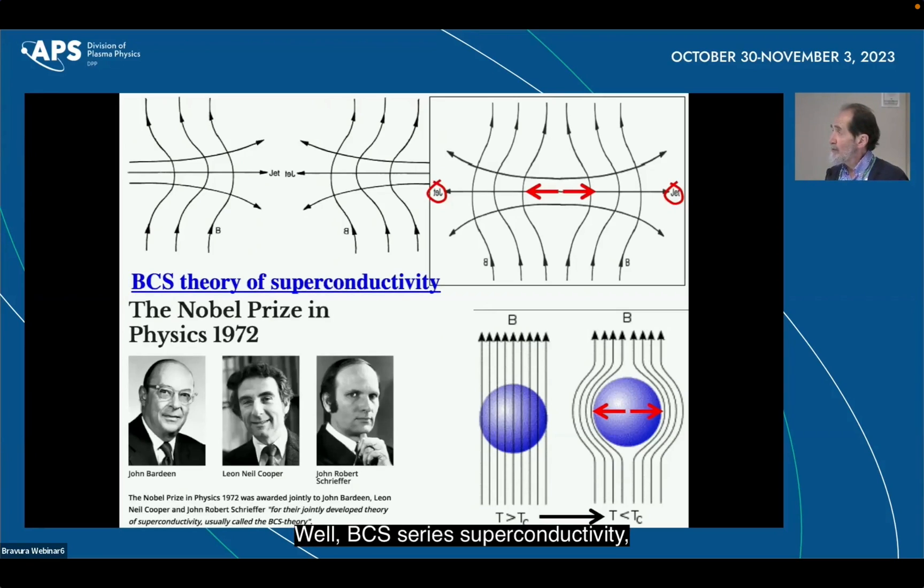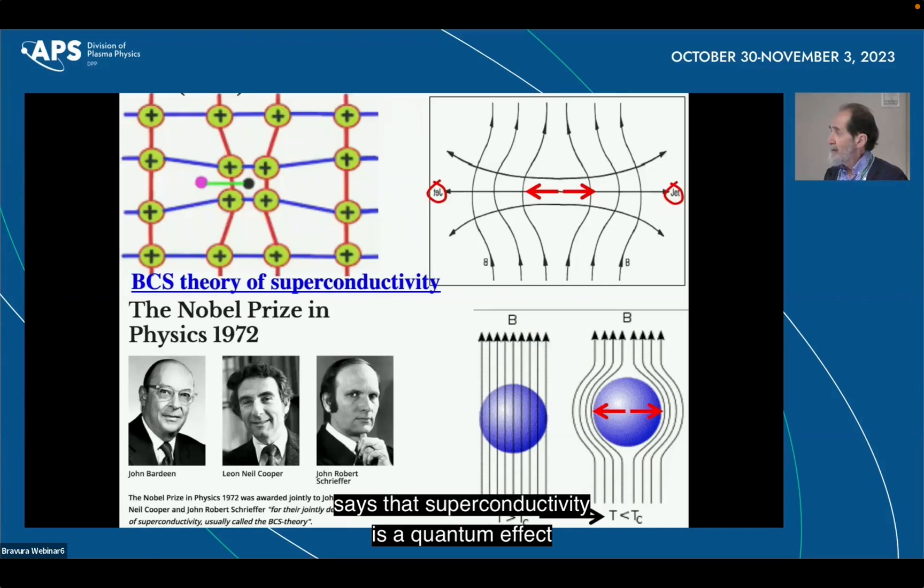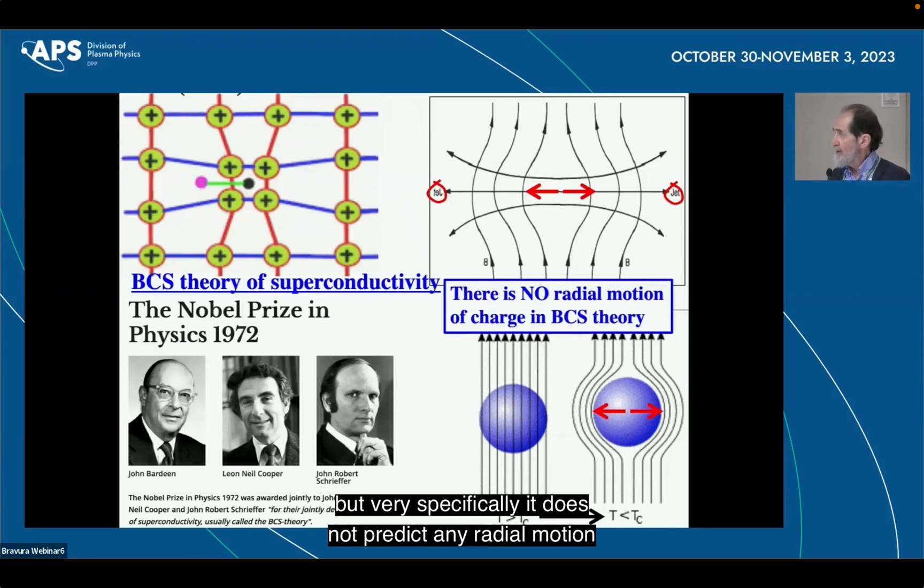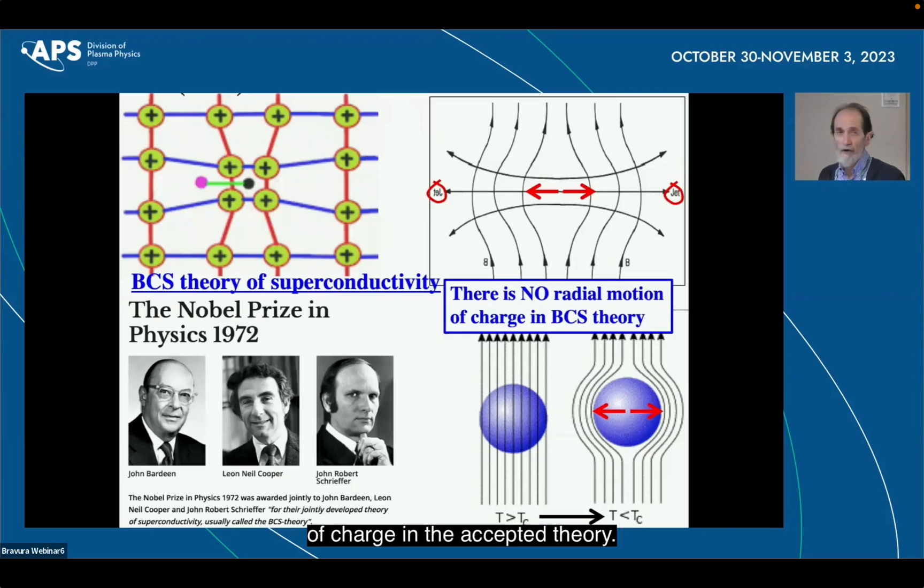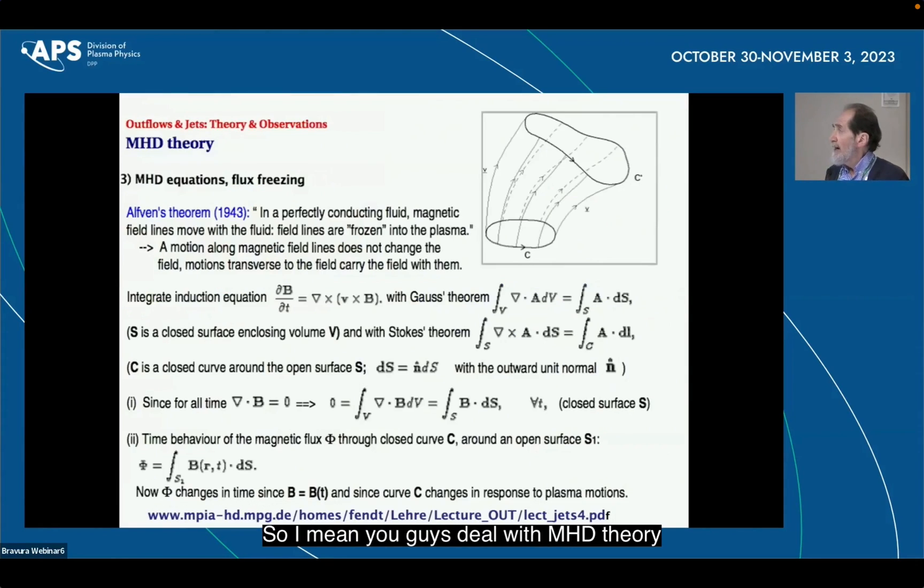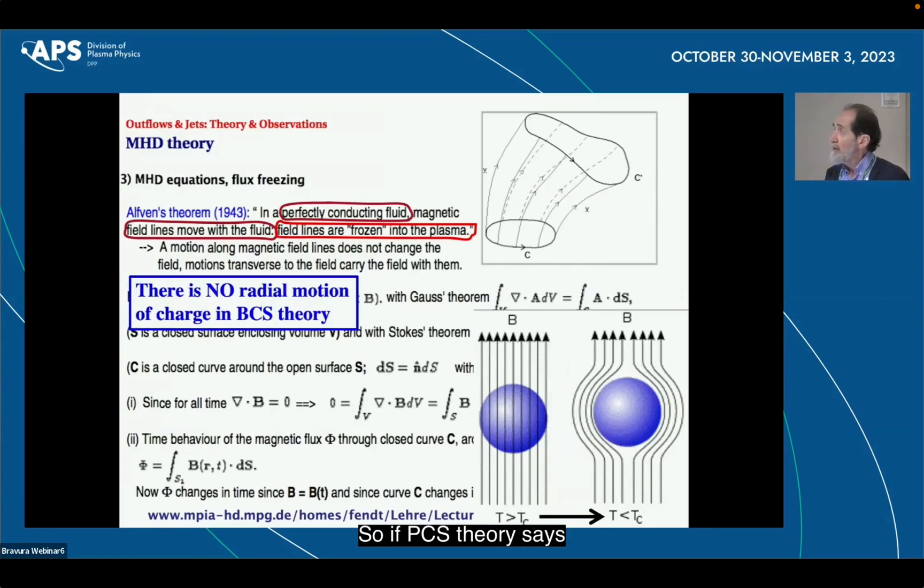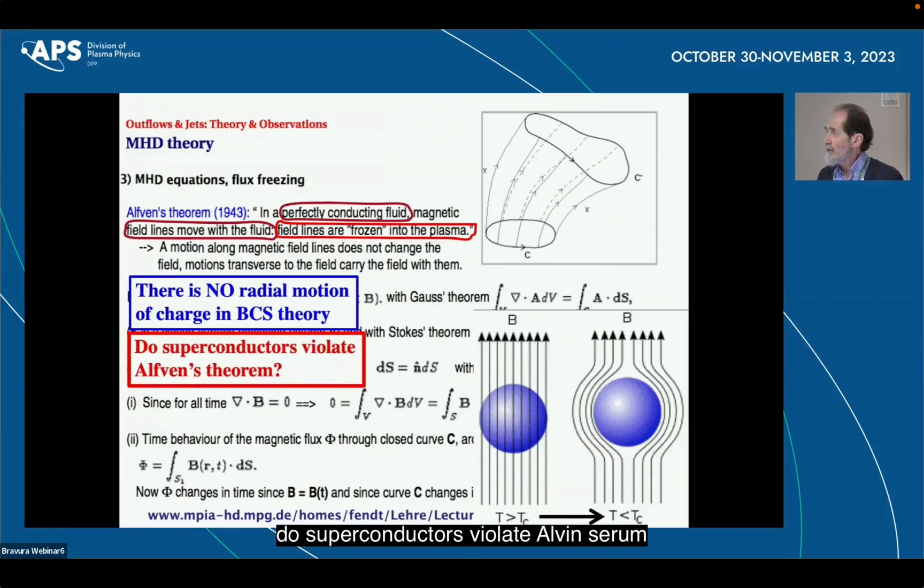Well, BCS theory of superconductivity, which is universally believed to explain superconductivity, which says that superconductivity is a quantum effect that comes from interaction between electrons and phonons that I will not go into, but very specifically does not predict any radial motion of charge in the accepted theory. So basically it doesn't really address the question of how are magnetic fields expelled? So, I mean, you guys deal with MHD theory every day, I suppose, so you know that Alfven's theorem says that in a perfectly conducting fluid, the field lines are frozen into the plasma, and the field lines move with the fluid.